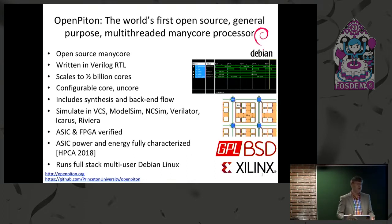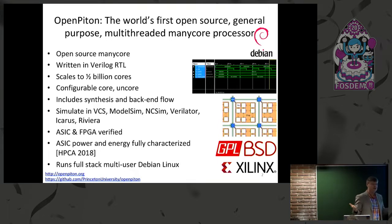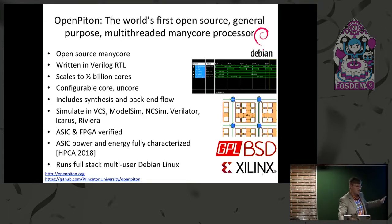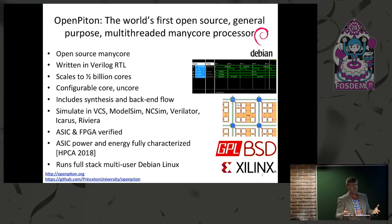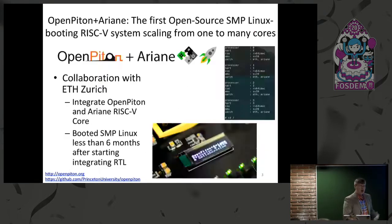You can use that to make sure your EDA tools are doing the right thing. It's really important to have a design reference of something that may have gone through a commercial tool, to see if you're getting good quality results. And this runs full-stack Debian Linux — it's a full working many-core design. We've built chips with 25 cores and can scale up to many more.